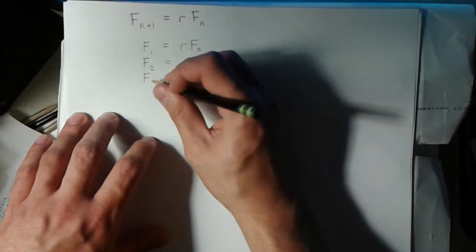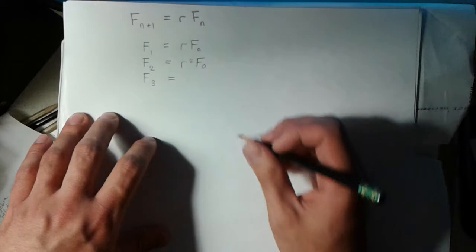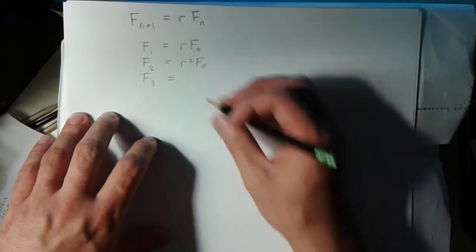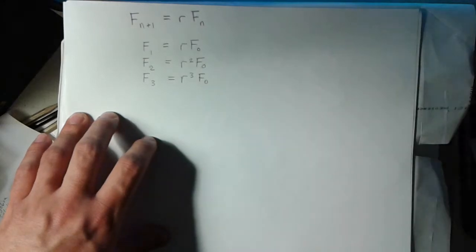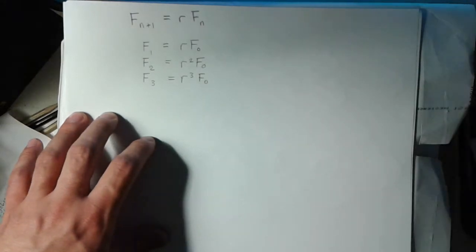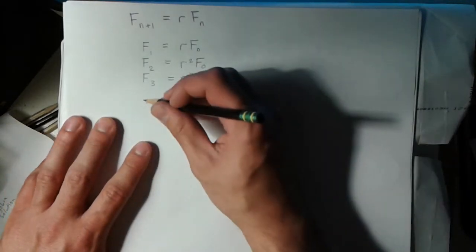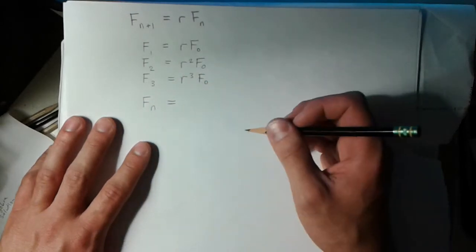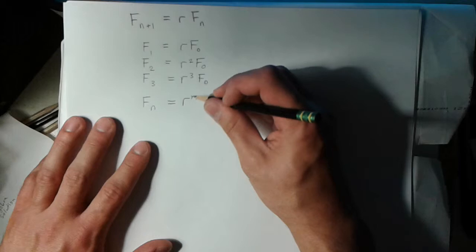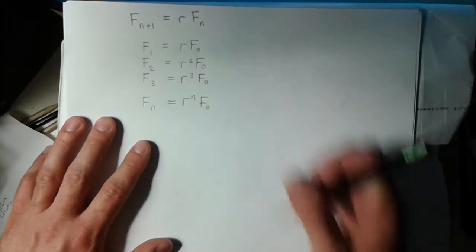We can look at the next term and see if there's a pattern. It's still r times the previous term, so it's r cubed F_0. The pattern becomes pretty clear pretty fast. You can just guess what the pattern is for the nth term, and that's your answer. It's a pretty simple technique.